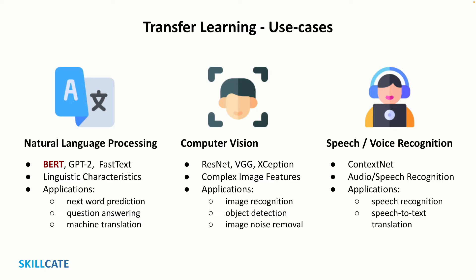Transfer learning has numerous use cases across natural language processing, computer vision, and speech recognition. NLP is, however, the most appealing transfer learning application as it solves cross-domain tasks by leveraging the knowledge of pre-trained AI models that understand linguistic characteristics. Deep learning models such as BERT, TensorFlow Universal Model, etc. are used in everyday NLP tasks like next word prediction, question answering, and machine translation.